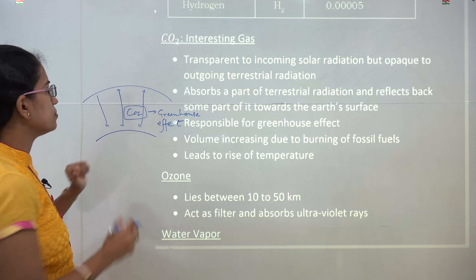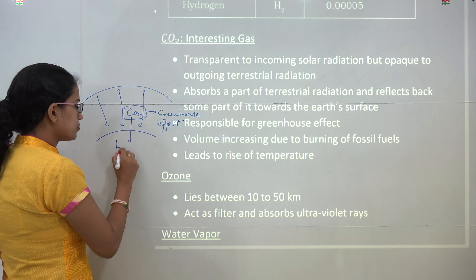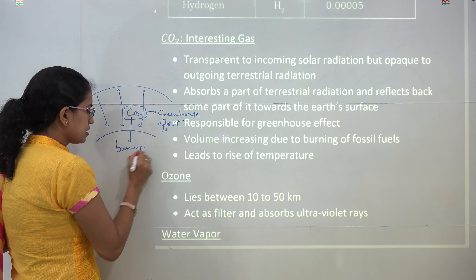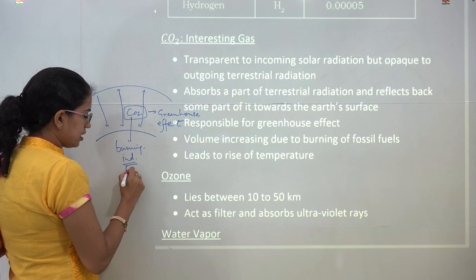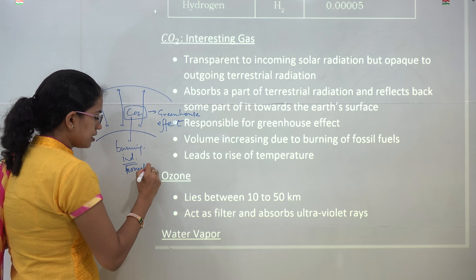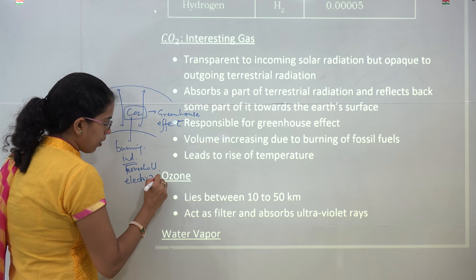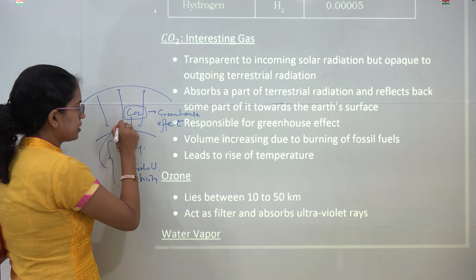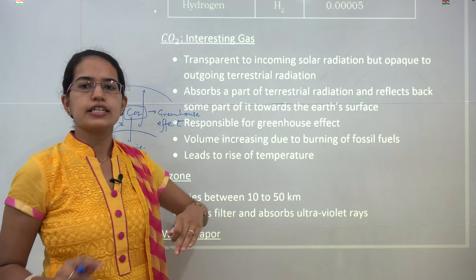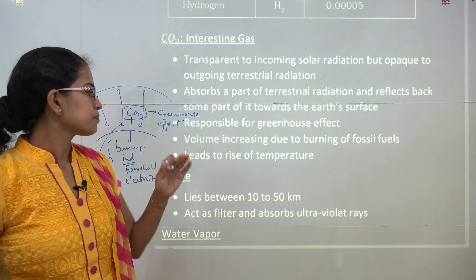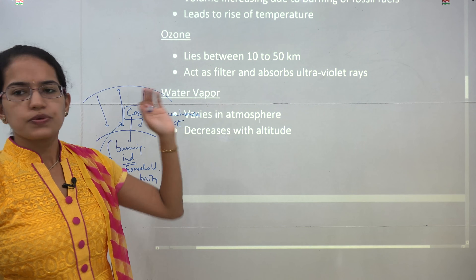How does this volume increase? Carbon dioxide increases in the atmosphere due to burning of fossil fuels, industrial waste and pollution, household pollution, and the process of electricity generation. All these processes lead to an increase in carbon dioxide in the atmosphere, which raises the temperature. Now, ozone occurs between 10 to 50 kilometers.